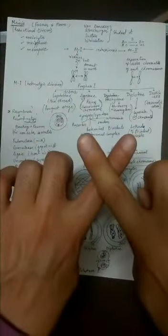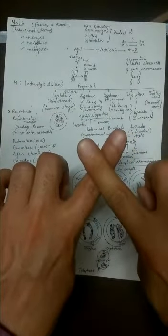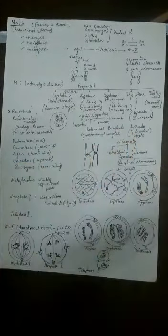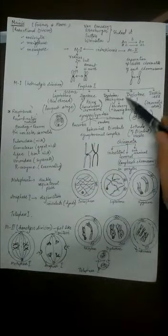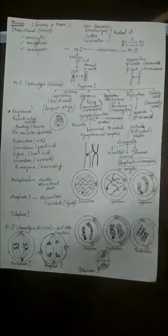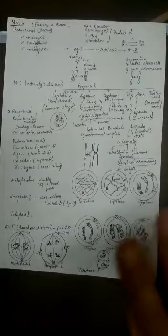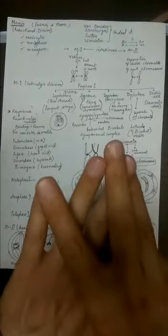As they start going far, they will still remain crossed at the places where crossing over has taken place. So crossing over is clearly visible in which stage? Diplotene. In pachytene, crossing over starts but is not visible because everything is overlapped. Once they start moving far, why? Because this complex is breaking.